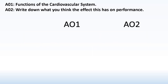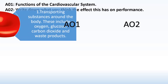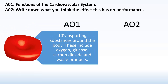When we talk about the functions, the first bit we need to know is the AO1. Hopefully you will have heard of AO1, AO2, AO3. AO1 is the knowledge, AO2 is the application. So for this case, the AO1 — the first function of the cardiovascular system — is to transport substances around the body.